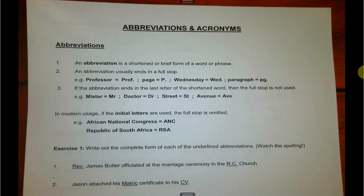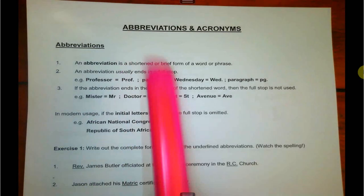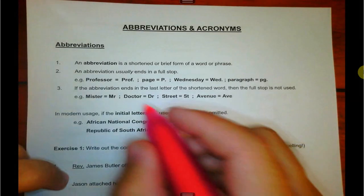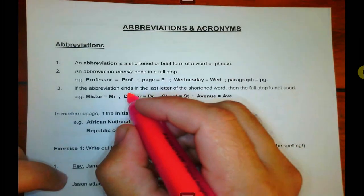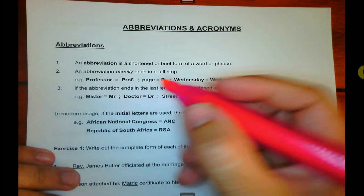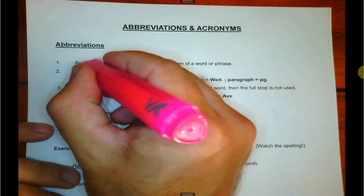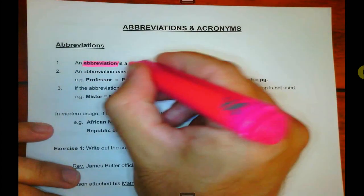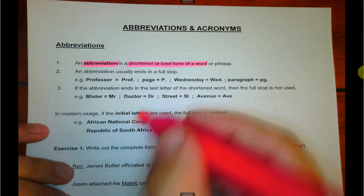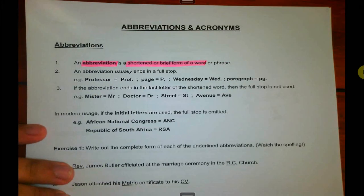So let's look at abbreviations and acronyms. I've got my highlighter here — it's always good to add some color to your page, makes it a little bit more endearing to want to study, and of course you want to highlight some important points. An abbreviation is a shortened or brief form of a word, and it usually ends in a full stop.